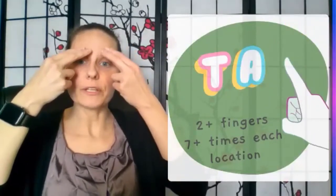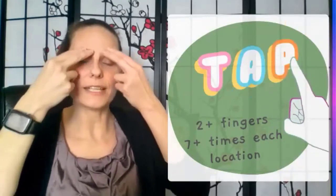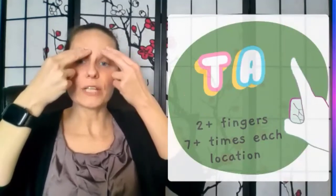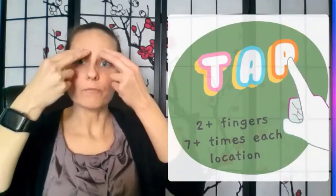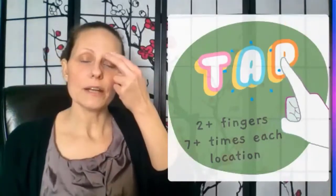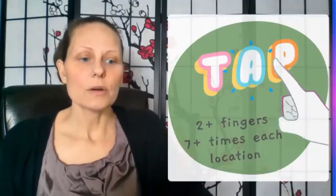I'm going to show you the tapping points and then how to do the technique. The very first point is called the karate chop point — exactly where you would karate chop, if you're going to cut a board with your hand. You're going to just tap very gently on the karate chop point. You can do either hand — it doesn't matter, right-handed or left-handed. You're going to use your two fingers or more right on the karate chop point. That's the first point. We're just going to go through the points and then I'll show you how to do the technique.